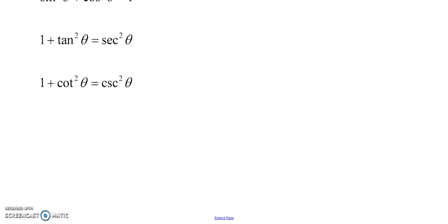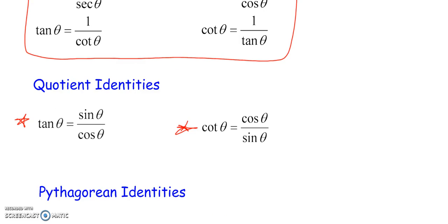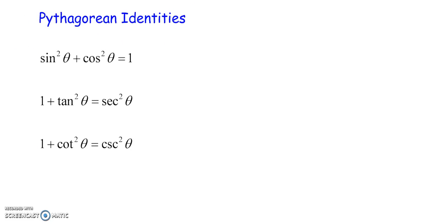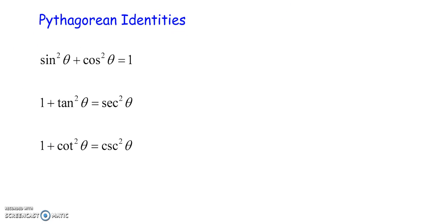And last but not least, you're going to see these Pythagorean identities. They stem from the Pythagorean theorem. Sine squared plus cosine squared equals one, one plus tangent squared equals secant squared, and one plus cotangent squared equals cosecant squared. We want to see all of these in our notes.